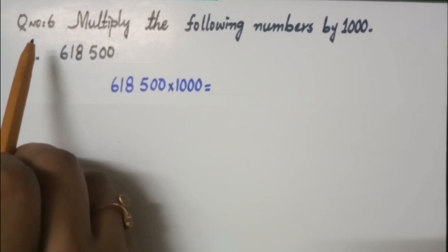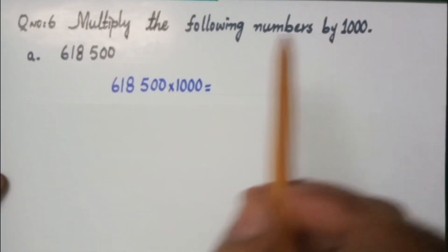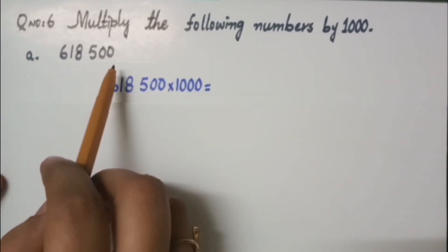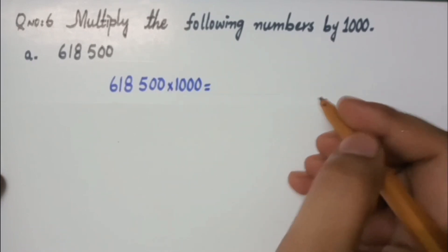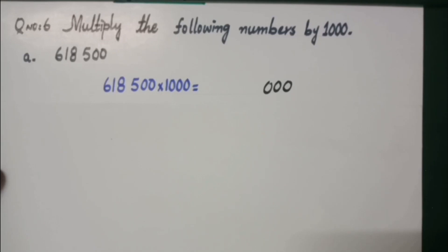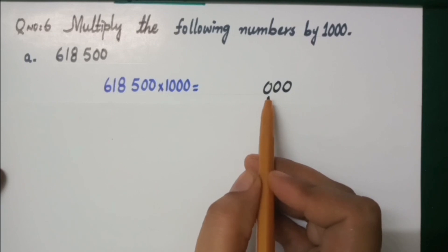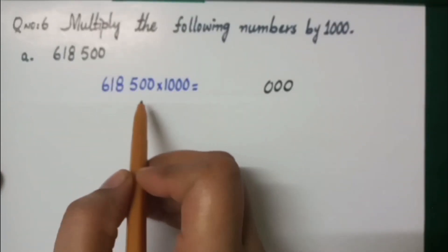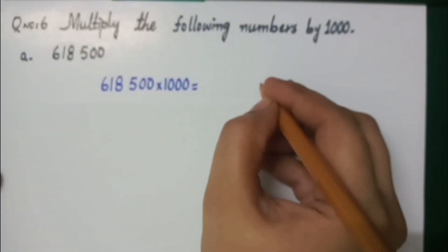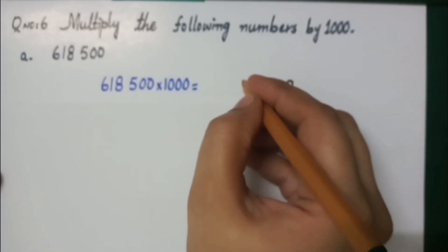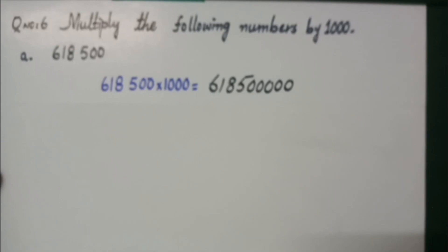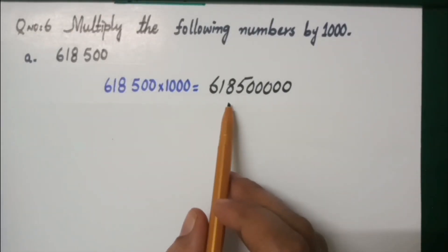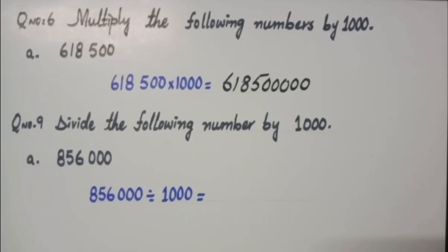Again applying the same multiplication rule. In question number 6, multiply the following numbers by 1000. Let's multiply 618,500 by 1000. What was the rule? First, write zeros to the right. There are three zeros, so write three zeros to the right, then the number to the left: 6, 1, 8, 5, 0, 0. This becomes 618,500,000.